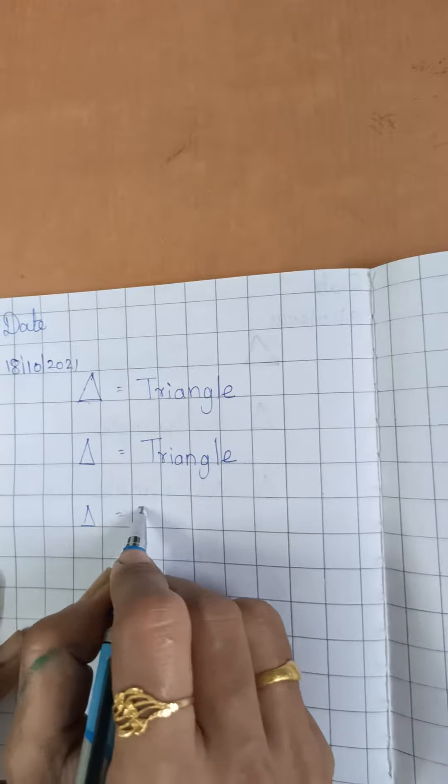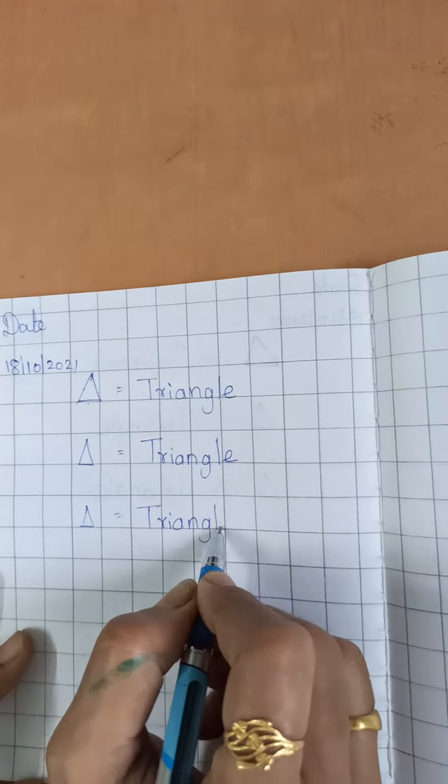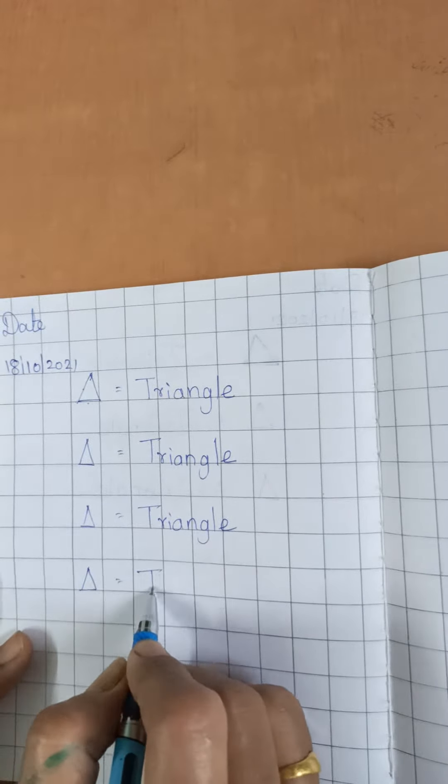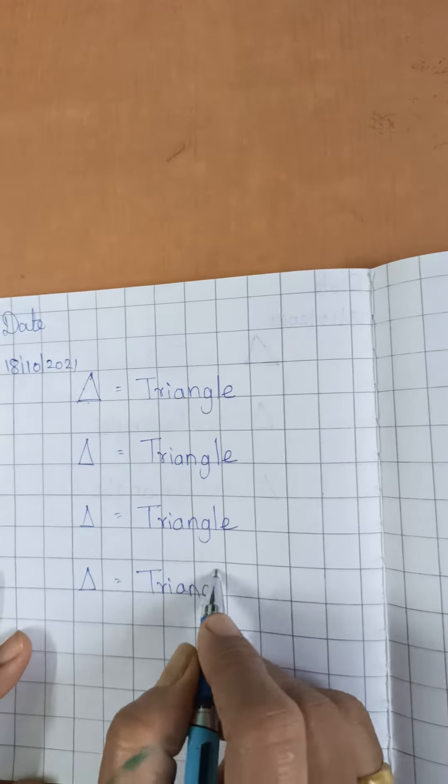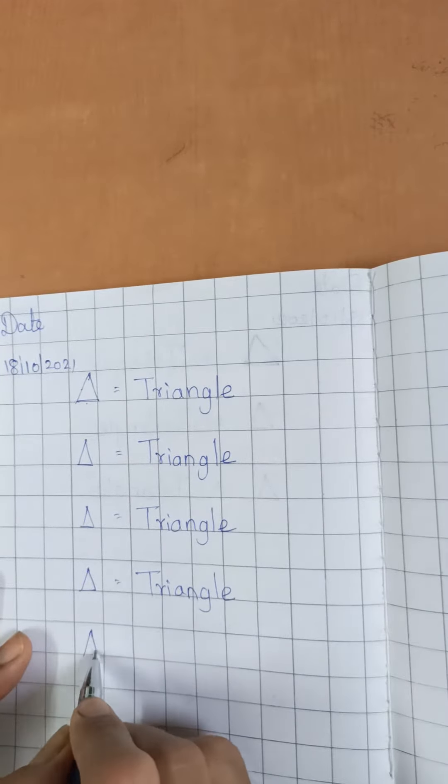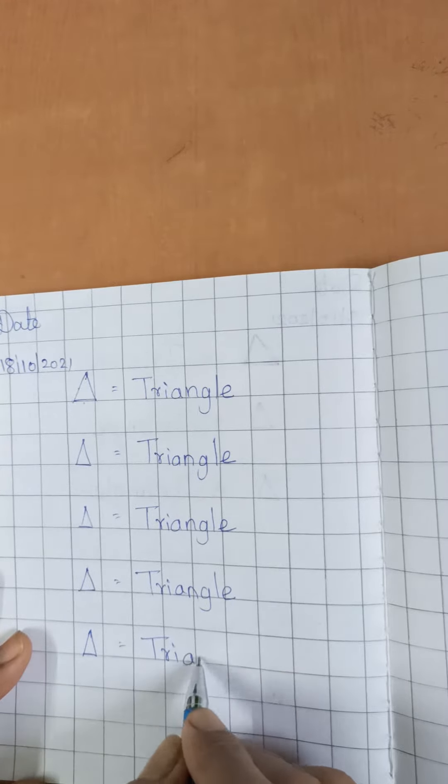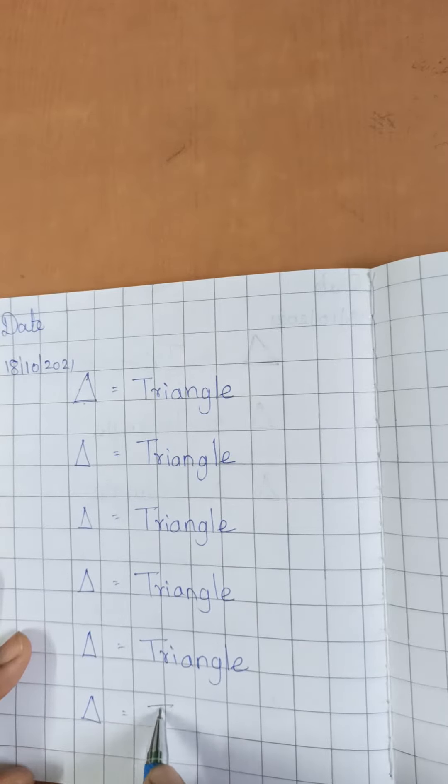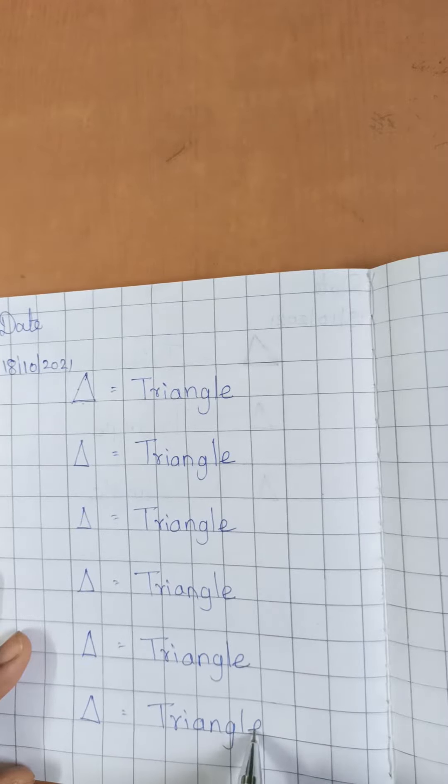[Writing repeatedly] Triangle is equal to T-R-I-A-N-G-L-E, triangle. T-R-I-A-N-G-L-E, triangle.